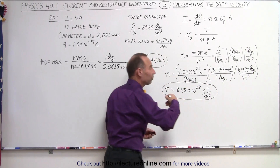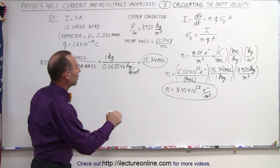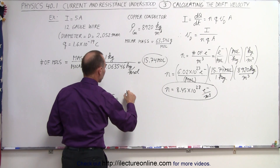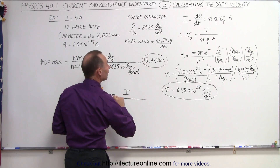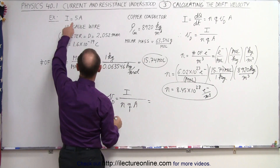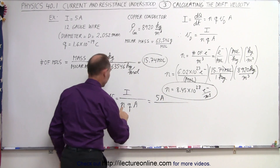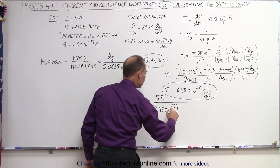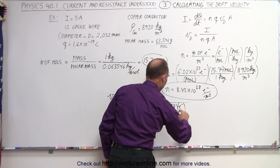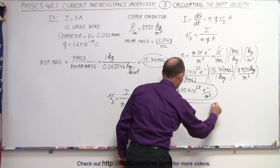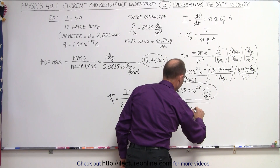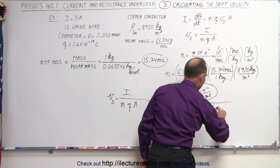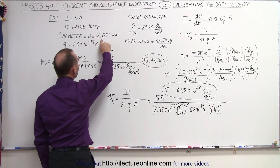This is the value of N for copper — of course, different metals will have a different number of carriers per cubic meter. Now we're ready to calculate the drift velocity. The drift velocity equals the current divided by N times the charge per carrier times A. We have a current of 5 amps, divided by 8.45 times 10 to the 28 charges per cubic meter, times the charge of each carrier, which is 1.6 times 10 to the minus 19 coulombs. Then we have the cross-sectional area, which is pi times r squared, where r is half the diameter.